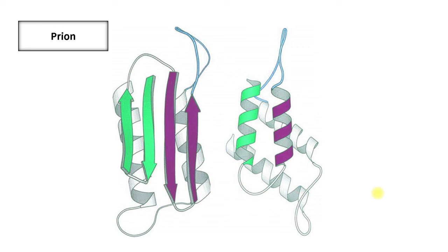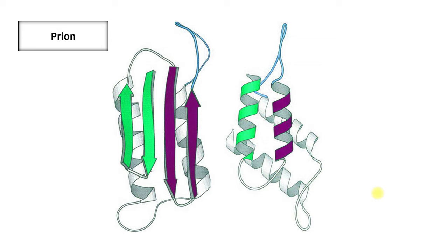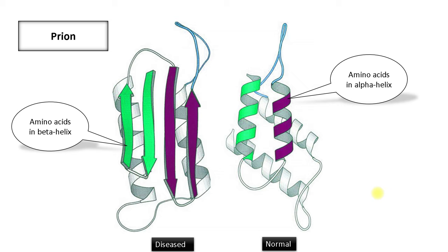Prions are nothing but protein. They neither have cells like us, bacteria, fungus or parasites, nor are they like a virus, which may not have a cell but has nucleic acids like DNA or RNA. It is just a protein but with an altered structure. In normal protein, the amino acids are predominantly folded in alpha helix, but in diseased prion protein, they are beta helix instead. This change makes these proteins infectious and resistant to many commonly used sterilizing processes.